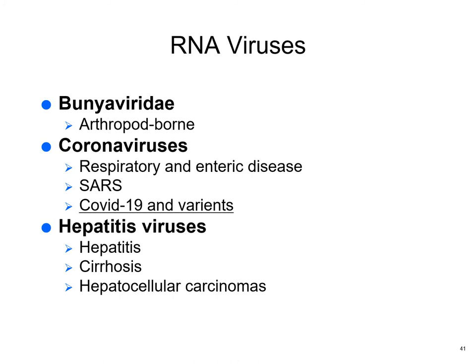RNA viruses: Bunyaviridae are arthropod-borne viruses we'll cover later. Coronaviruses cause respiratory and enteric disease — SARS was the first big one, then COVID-19, for which beautiful vaccines were developed. Then variants and mutations emerged — the Delta variant. I was told that Macon hospitals are almost completely full of Delta variant patients, and there was not a single bed at Vanderbilt University Hospital in Nashville, Tennessee because of the Delta variant.